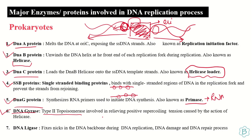Next is the DNA gyrase protein. It is a type 2 topoisomerase, and its function is to relieve all the tension caused by the helicase enzyme. As helicase moves in a particular direction, it creates positive supercoiling ahead. To resolve this tension and positive supercoiling, the DNA gyrase enzyme relieves these positive supercoils.